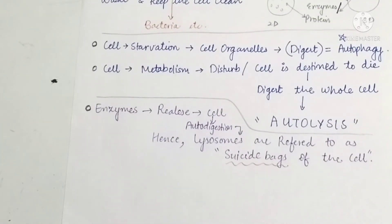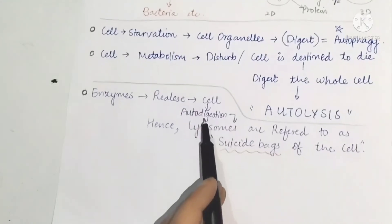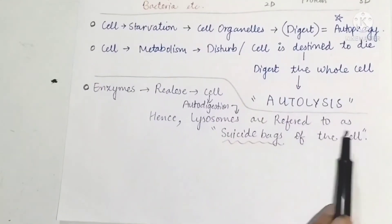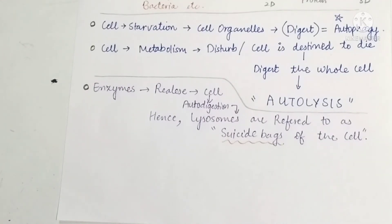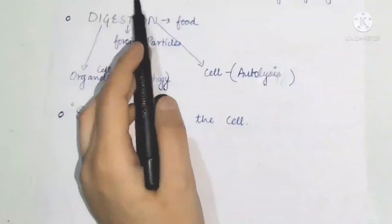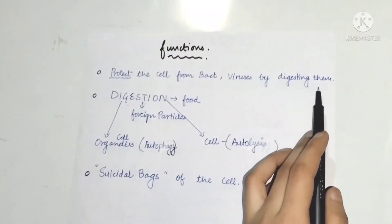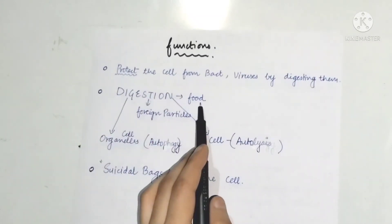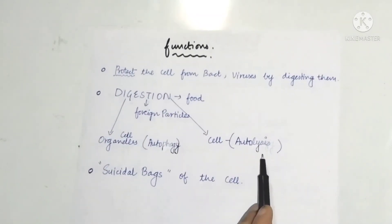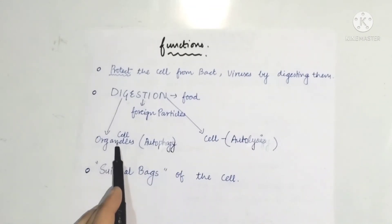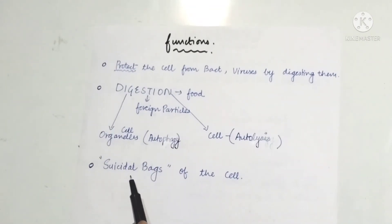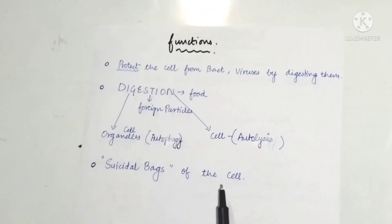Because lysosomes burst and auto-digestion occurs, lysosomes are referred to as the suicidal bags of the cell. Functions include: protecting the cell from bacteria and viruses, digestion of foreign particles, autophagy of cell organelles, and autolysis of the whole cell. The powerhouse of the cell is the mitochondria.